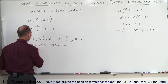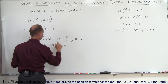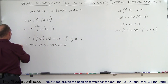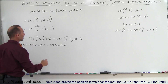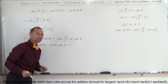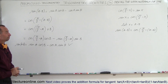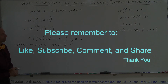And if you look at this and compare it, it looks exactly the same, which means that the sine of a minus b can be written as sine a cosine b minus cosine a sine b, and we've proven it. And that's how we do that. Thank you.